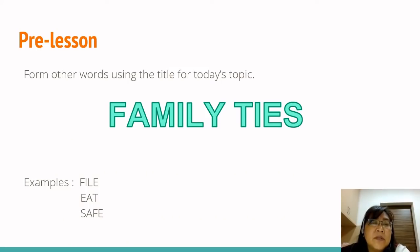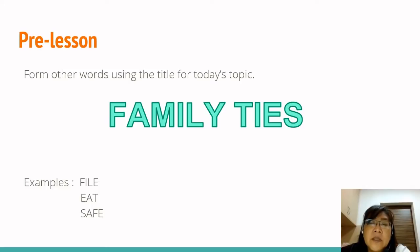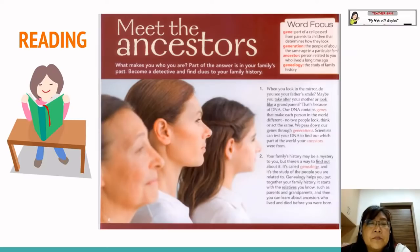For the pre-lesson activity, pupils can form other words using the title for today's topic, Family Ties. For example, you can form the word 'file' (F-I-L-E), or the word 'eat' (E-A-T), or 'safe' (S-A-F-E).